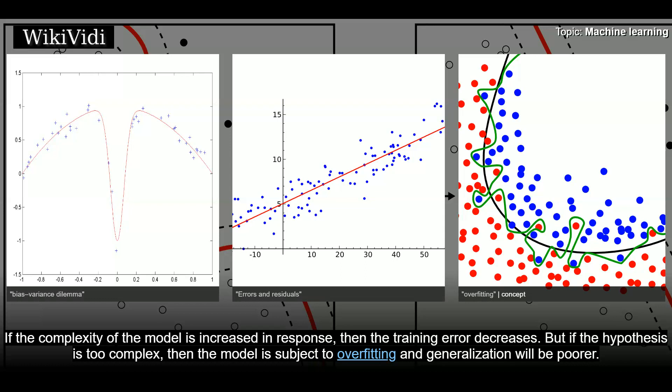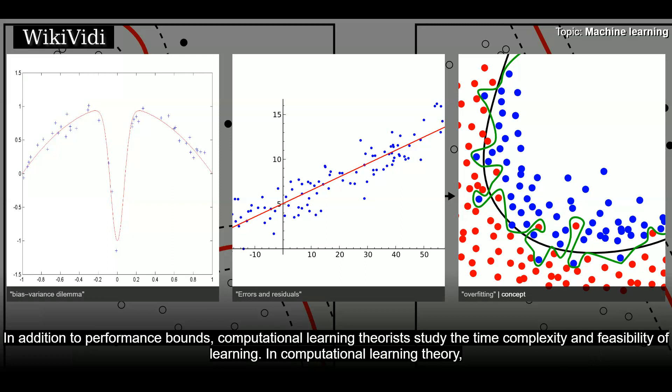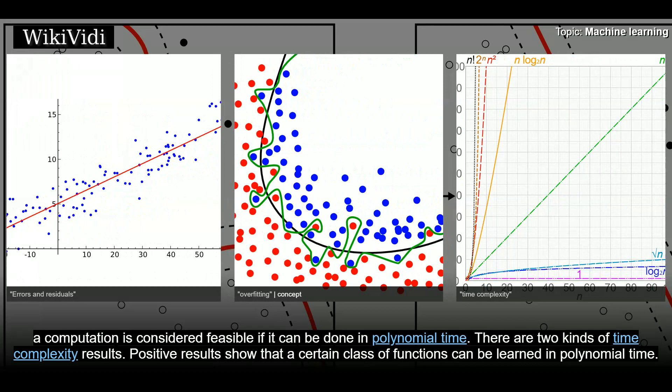In addition to performance bounds, computational learning theorists study the time complexity and feasibility of learning. In computational learning theory, a computation is considered feasible if it can be done in polynomial time. There are two kinds of time complexity results. Positive results show that a certain class of functions can be learned in polynomial time. Negative results show that certain classes cannot be learned in polynomial time.